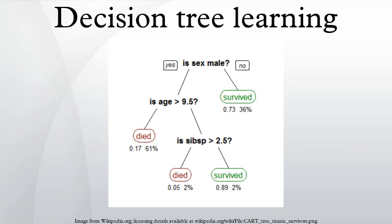Decision tree learning is the construction of a decision tree from class-labeled training tuples. A decision tree is a flowchart-like structure where each internal node denotes a test on an attribute, each branch represents the outcome of a test, and each leaf node holds a class label. The topmost node in a tree is the root node. There are many specific decision tree algorithms. Notable ones include ID3, C4.5, CART, and CHAID, which performs multi-level splits when computing classification trees.